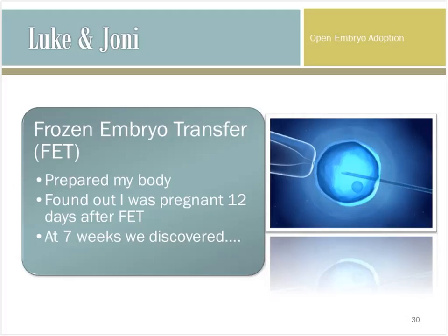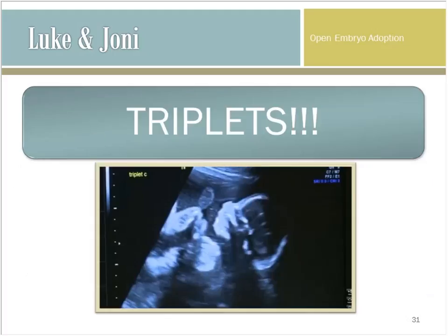At seven weeks, we discovered: triplets! As Laura said earlier, having two live births with just three embryos is pretty remarkable. We had three live births with just two embryos — the odds of that happening are literally zero. What happened is two were transferred, one split, all three implanted, and here we are.